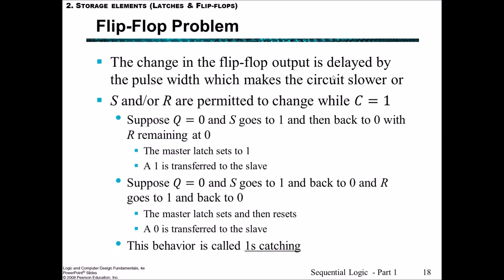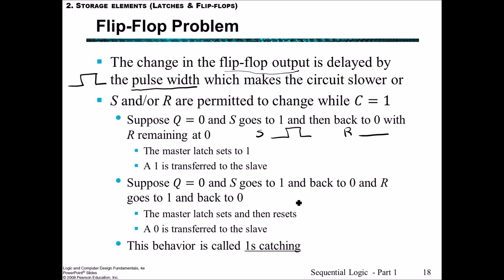You may notice now that although we've solved one problem, we've actually slowed down the circuit because the flip-flop output is delayed by the clock pulse width. Also, if S and R are permitted to change while the clock is 1 — suppose Q is 0 and S goes to 1 and back to 0 with R remaining at 0 — then the master latch is set to 1 and a 1 is transferred to the slave. But if both S and R go to 1 and back to 0, then the master latch sets and then resets, and a 0 is transferred to the slave. This is called one's catching.